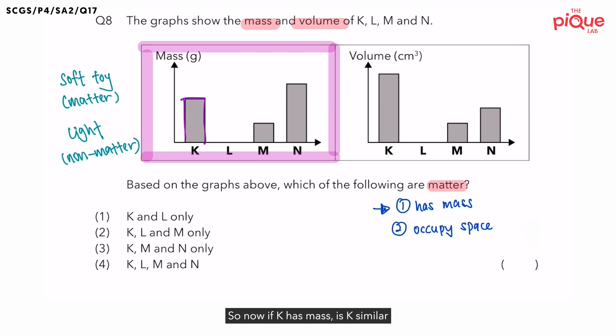So now, if K has mass, is K similar to the soft toy or the light? It is similar to the soft toy. So can we call K a matter? The answer is yes. Other than K, who else also have mass? It will be M and N. This is because there are bars drawn for both M and N, which means they have mass too.